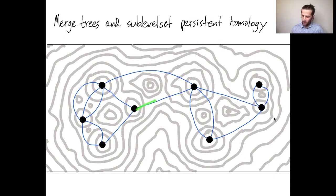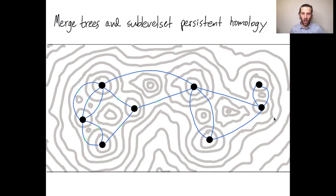To traverse from one local minimum to another, if you go along that path, that's a way to do it where you increase the elevation by as little as possible. The saddle points are these points right here where, along such a path, you hit the highest elevation along that path. Many trails that you walk around on in the mountains will actually go over saddle points.